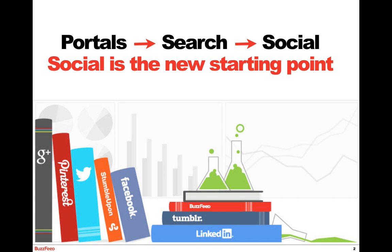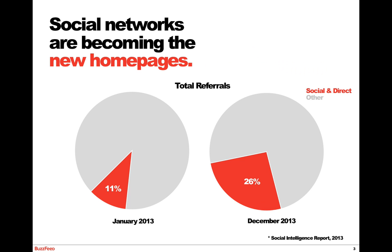Now it's quickly becoming social. Think about the last piece of news and entertainment content you looked at — where did you find it? According to the 2013 Social Intelligence Report, when we look at total referrals to publisher content, in January 2013 they were around 11%, and by December 2013 they had more than doubled. In January, about 75% of all content was discovered from users going directly to publishers' and brands' websites and homepages.